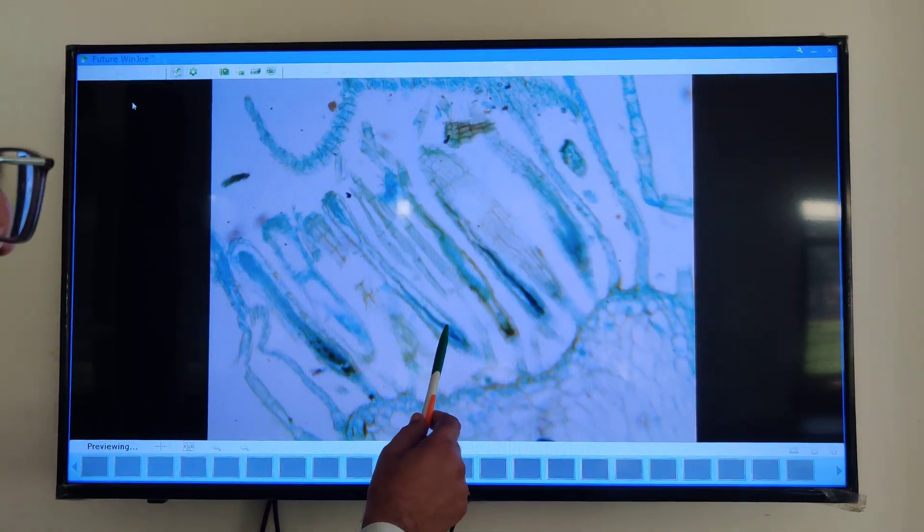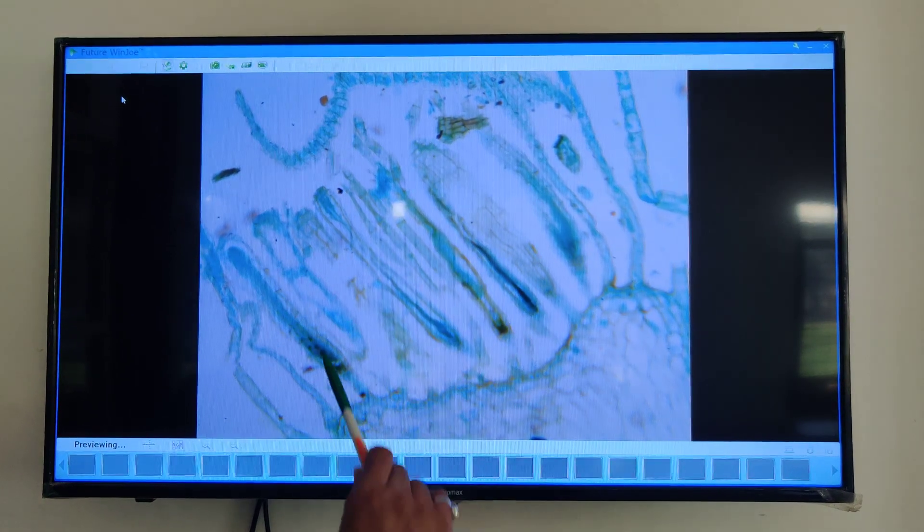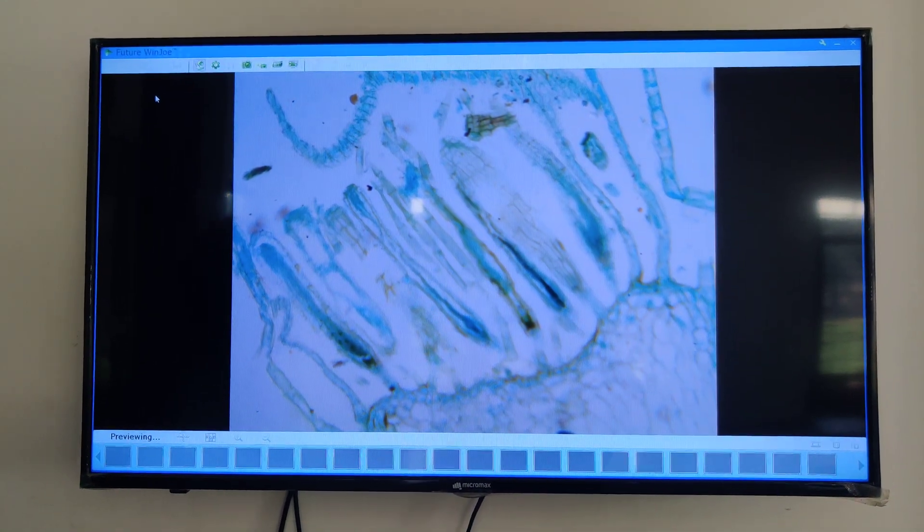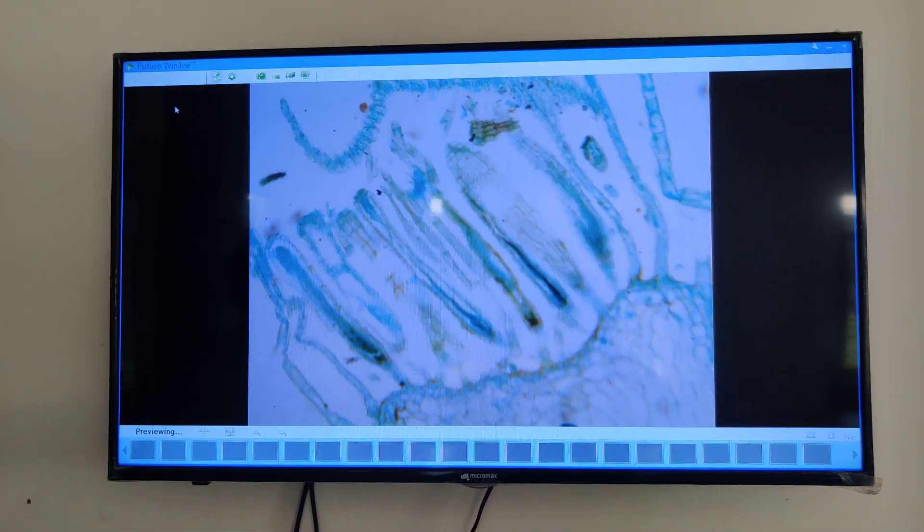So, these Archegonia on the female branch. Now, we will study the structure of Moss capsule with the help of a permanent slide.